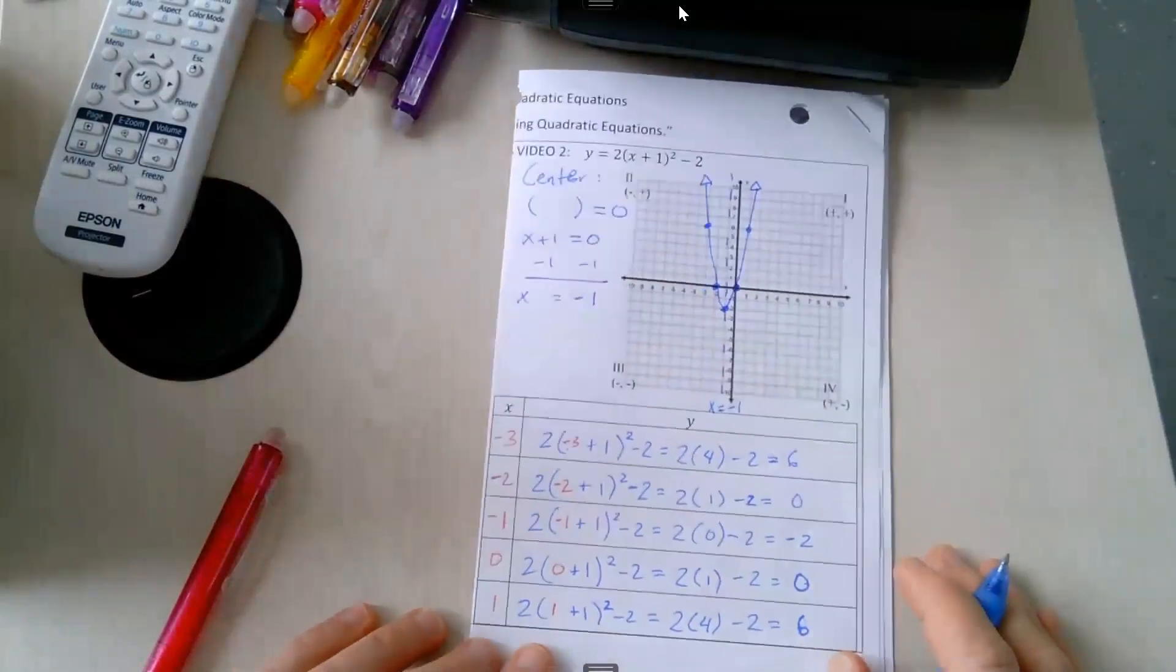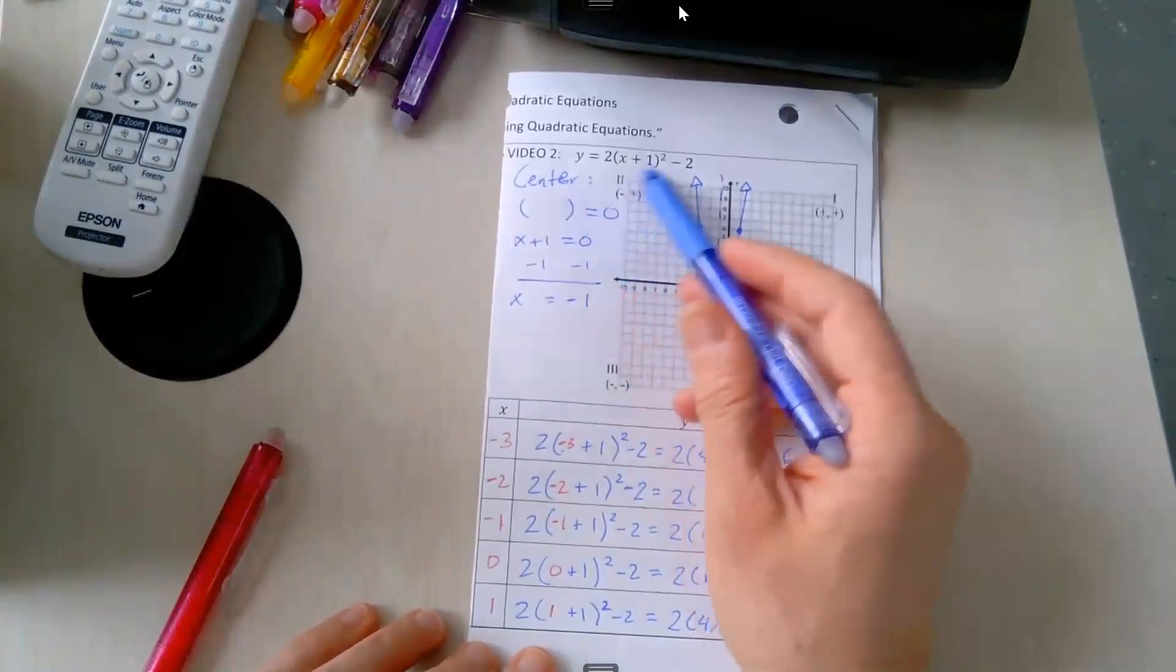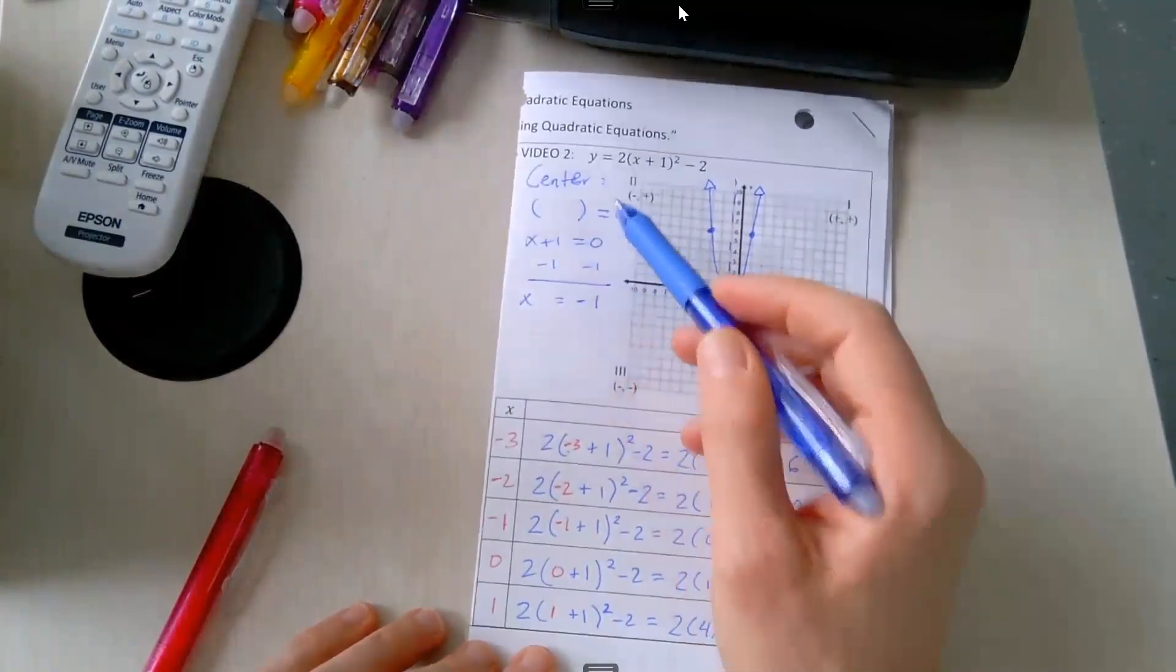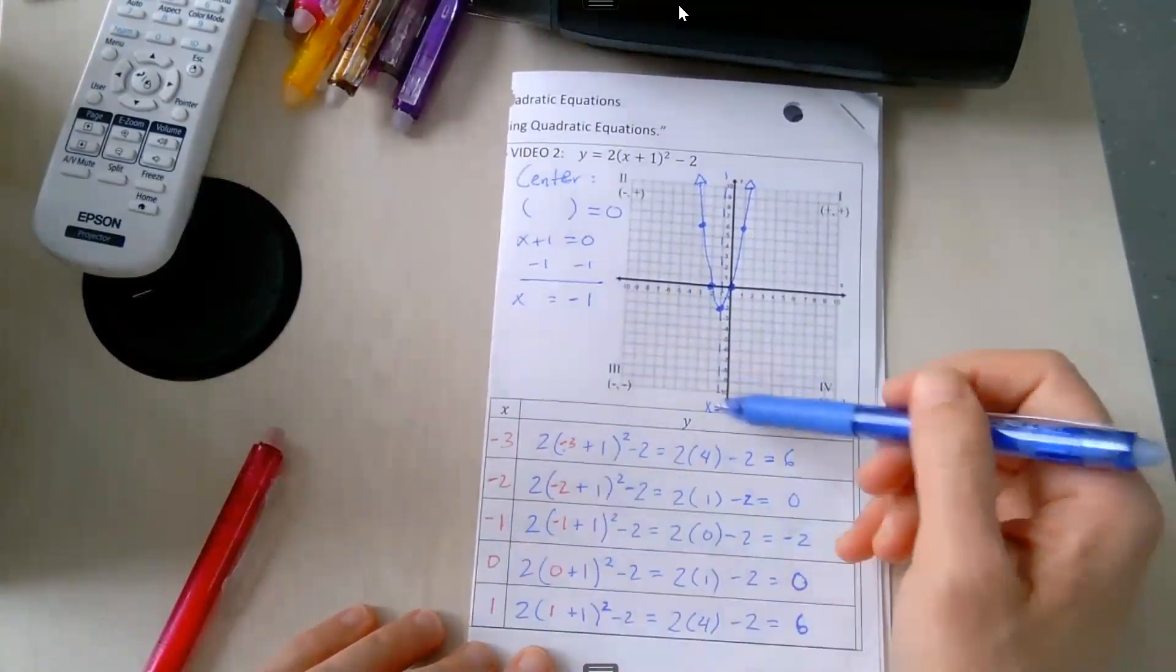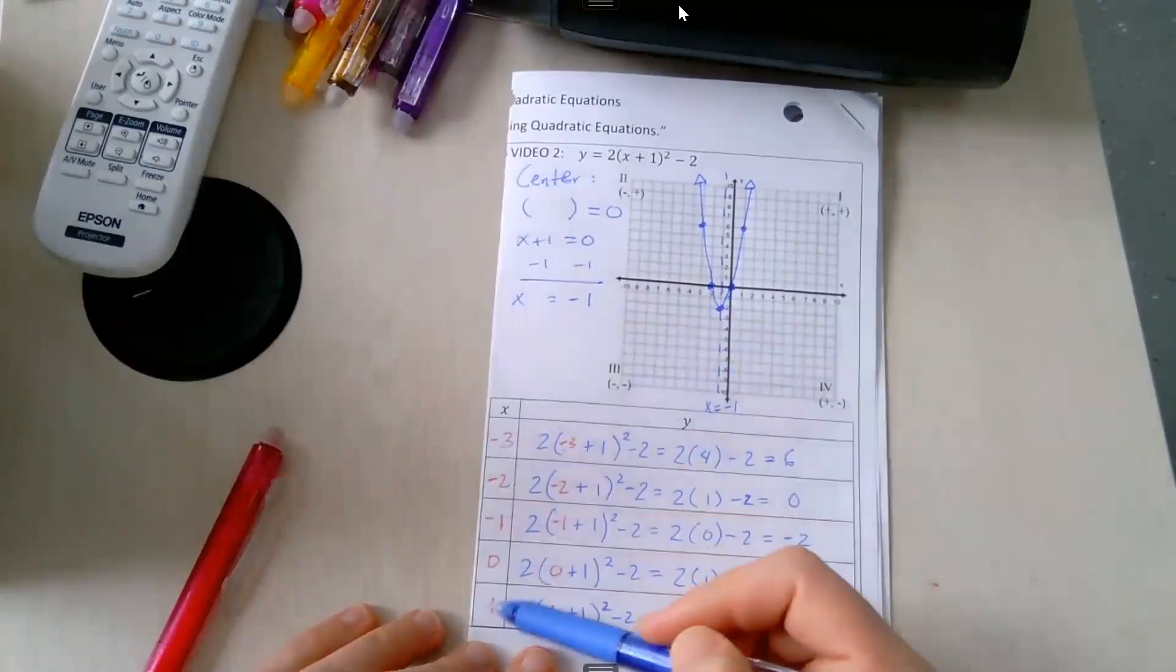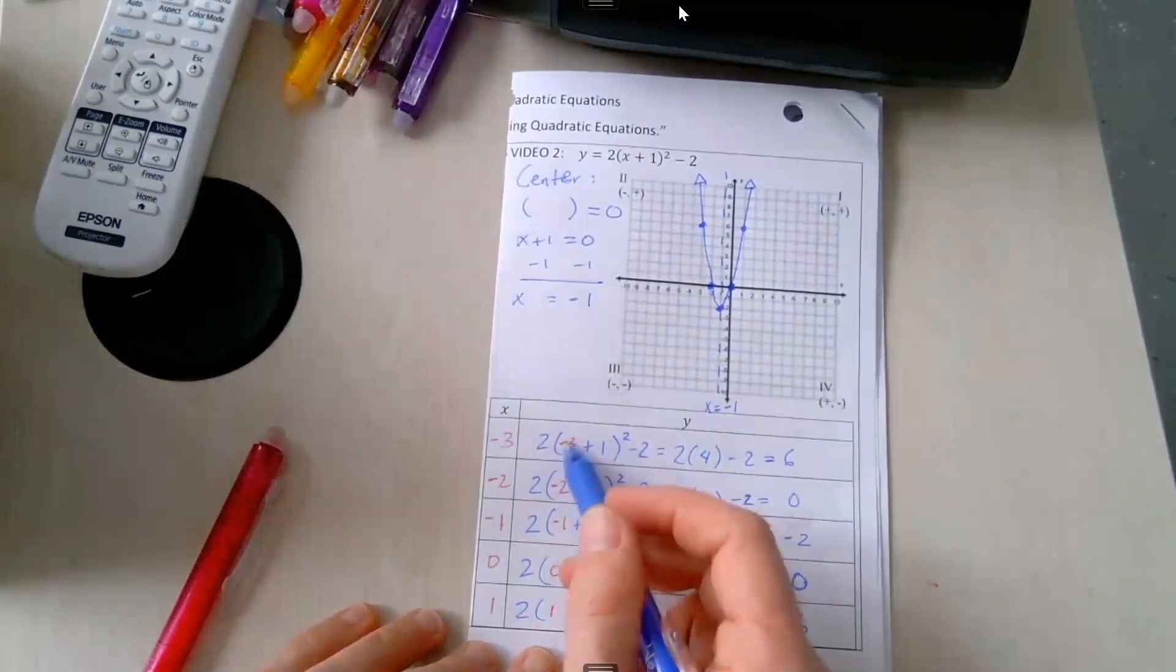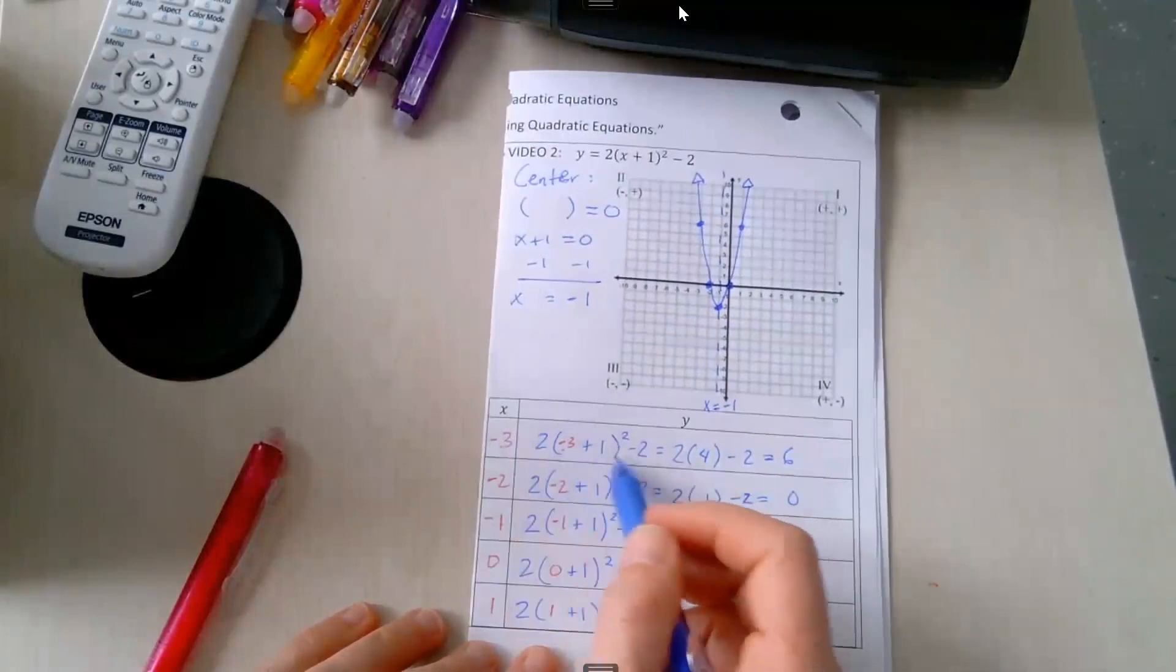And you've done it. Nice job. So remember to find the center, set the thing in parentheses equal to 0 and solve for x. That'll tell you what your center x value should be. Then plug in the x values around that center. When you're plugging in your x values and evaluating, remember order of operations. So do what's in parentheses first, then do the exponent, then multiply, then subtract 2.